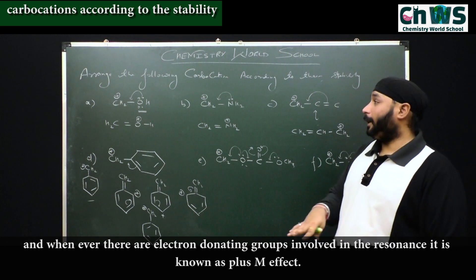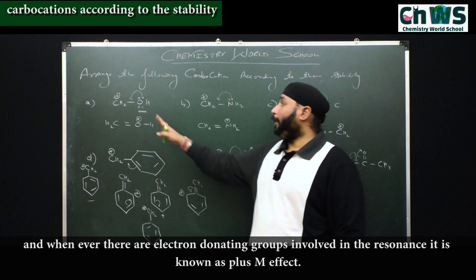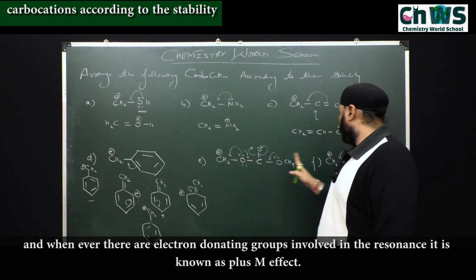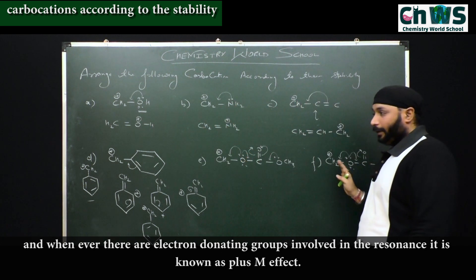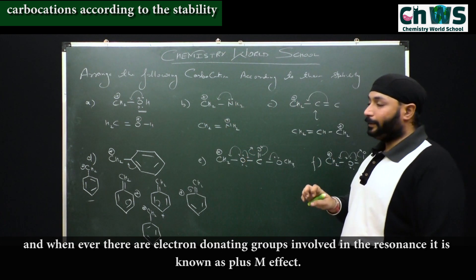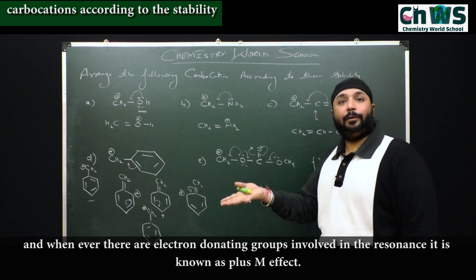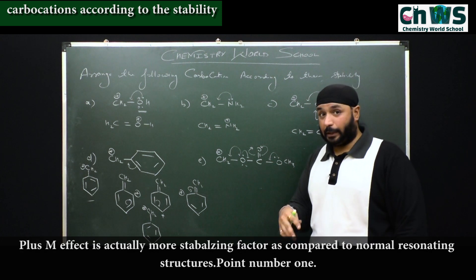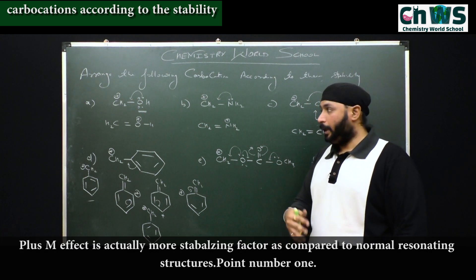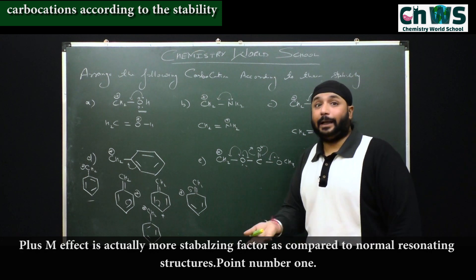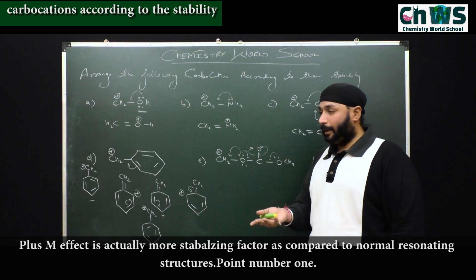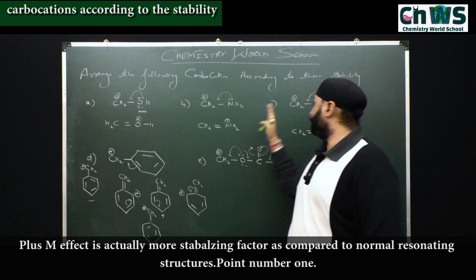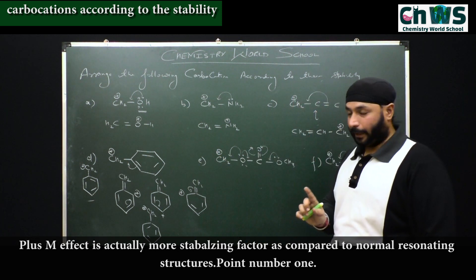Whenever resonance is done by C=C, it is known as normal resonance. Whenever there are electron donating groups involved in the resonance, that is known as the +M effect. And the +M effect is actually a more stabilizing factor as compared to normal resonance. That is point number one.